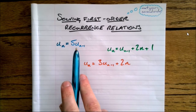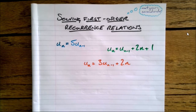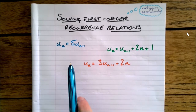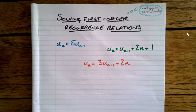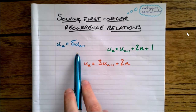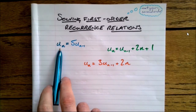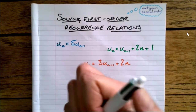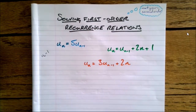A way into recurrence relations if you're stuck is to just find a few terms. I haven't given a first term for any of these — we're just going to find what are called the general solutions, and then you might apply some initial conditions afterwards if you know them. So let's pick a random initial term: let's say U0 equals 1, just to get our heads around it.